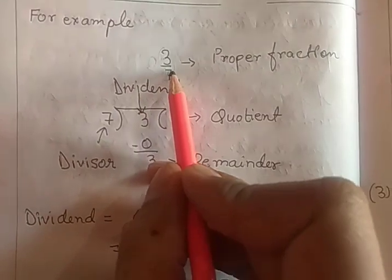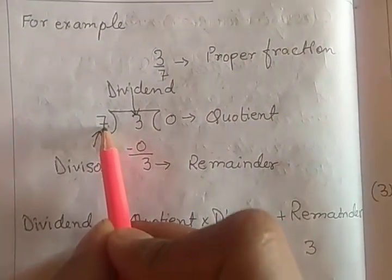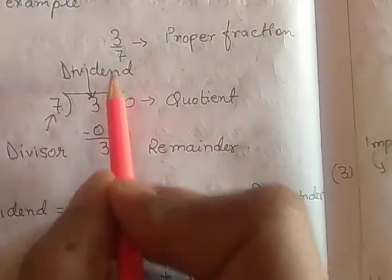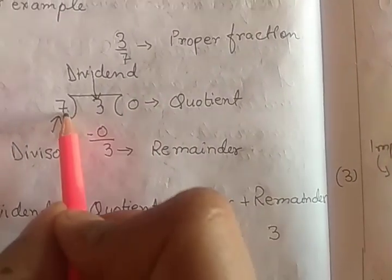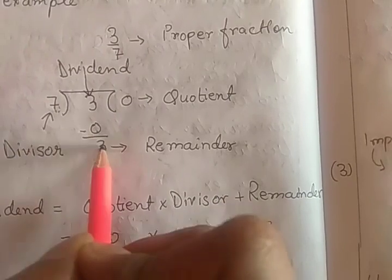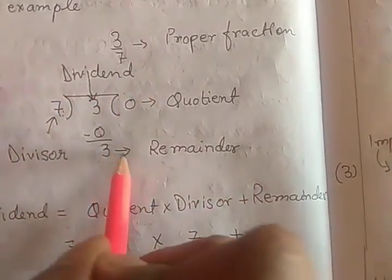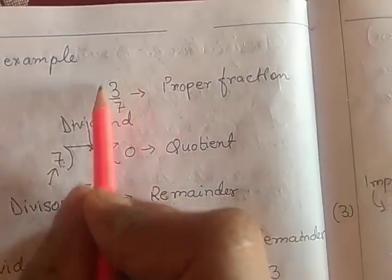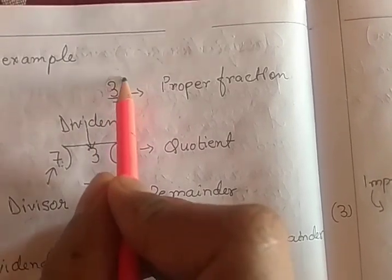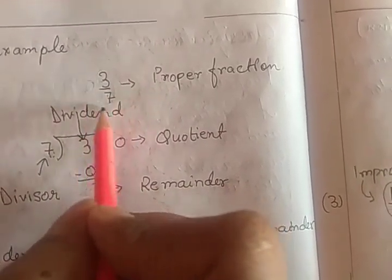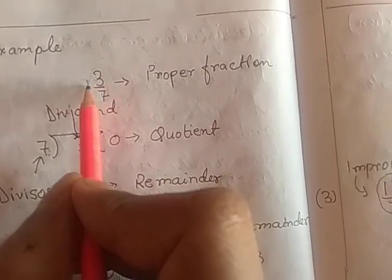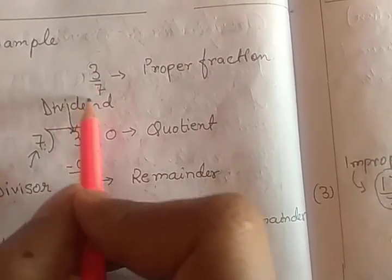The denominator is the divisor and the numerator is the dividend. 7 into 0 gives 0, and if we minus, the remainder itself will be the same as the dividend. With 3 by 7, we can't say it's a mixed fraction — we say it as a proper fraction. But if we add 1 as the whole number, surely it's a mixed fraction.